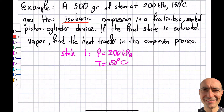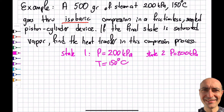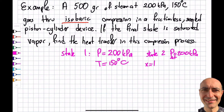Isobaric means pressure is constant, so at State 2, P will also be 200 kilopascals. It's a frictionless piston-cylinder device. The final state is saturated vapor, so State 2 has P = 200 kPa, and the quality x = 1, meaning it is saturated vapor.